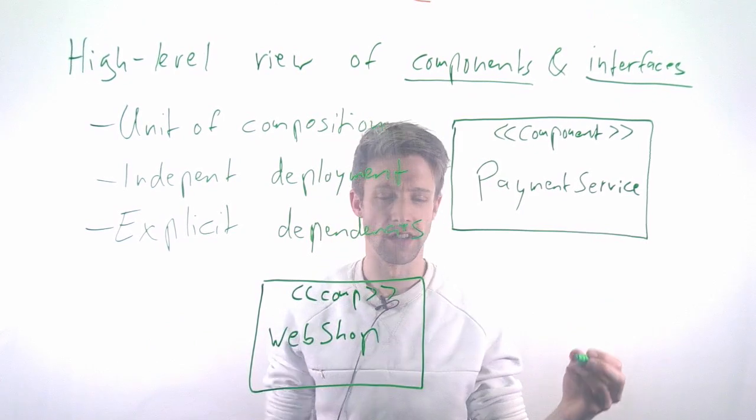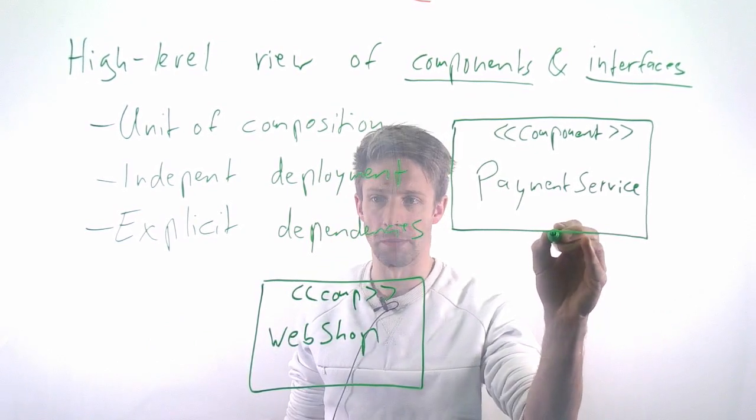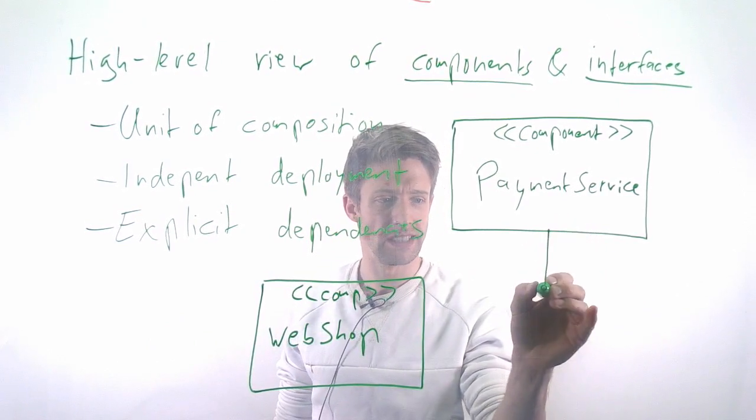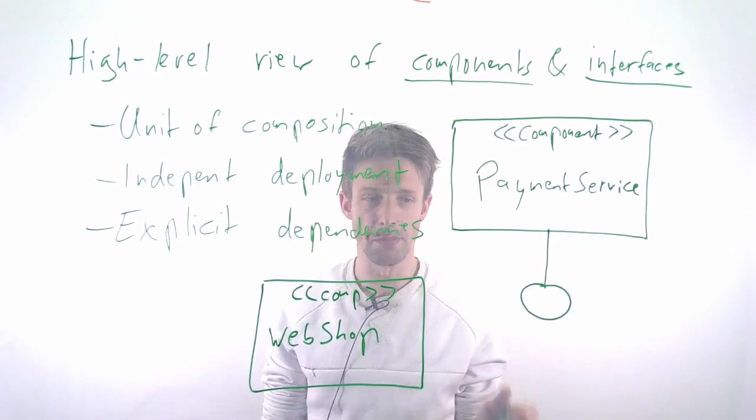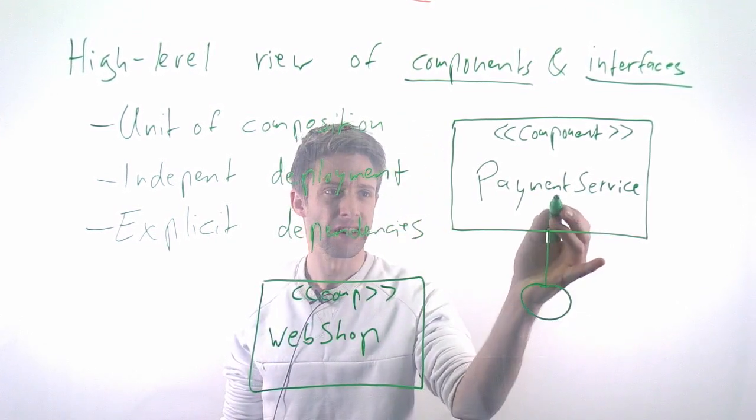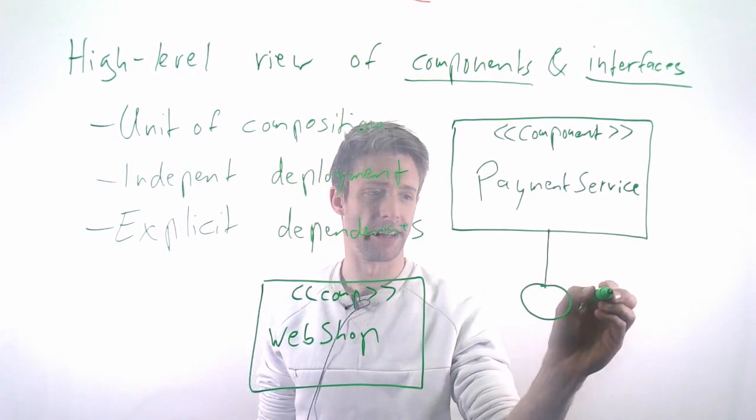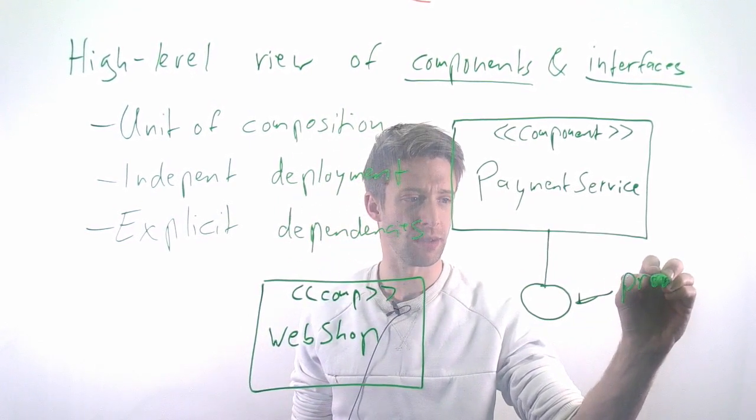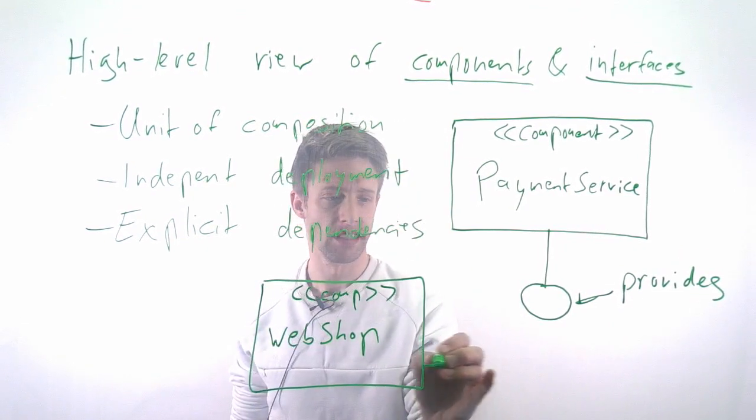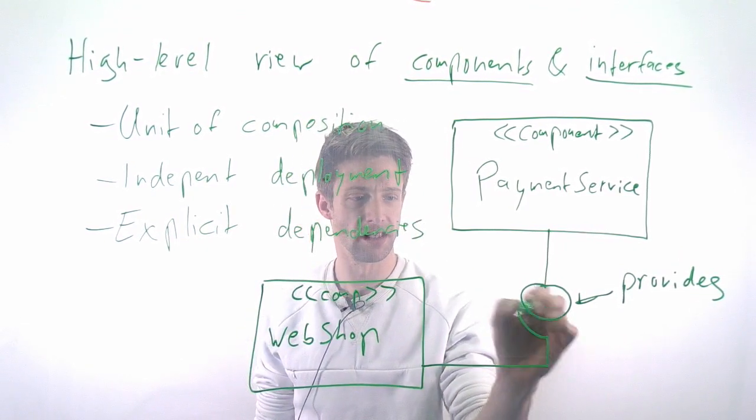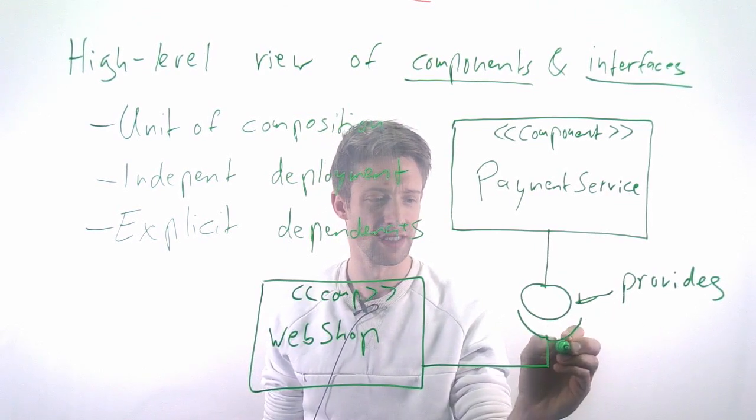These are the components, but we also need the interfaces, the dependencies. This is often done using the so-called lollipop notation, basically a line with this round circle at the end, so it looks like a lollipop. This means this service is providing something. Then we have the opposite, the notation that our service requires something.